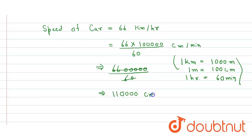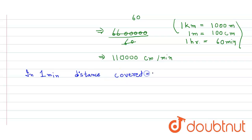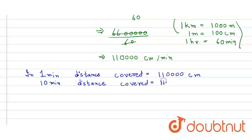So we can say that in one minute the distance traveled by the car is equal to 1100 centimeter per minute. But we have to find the distance covered in 10 minutes, so 10-minute distance covered will be 1100 into 10, which equals 11000 centimeter. This is the total distance covered in 10 minutes.